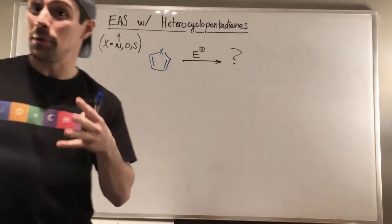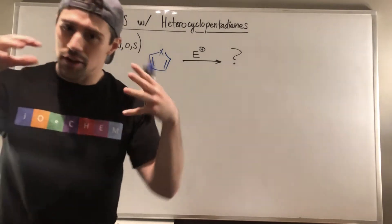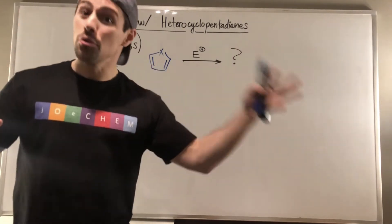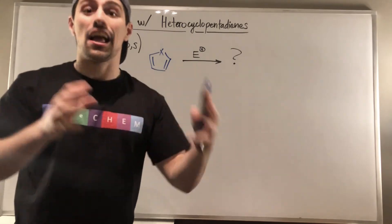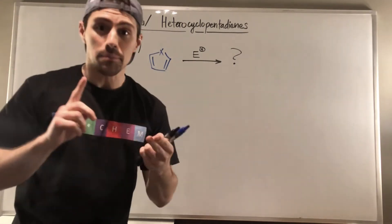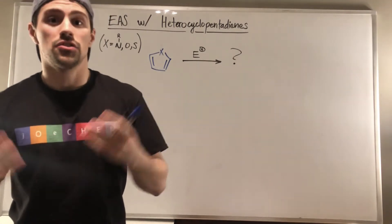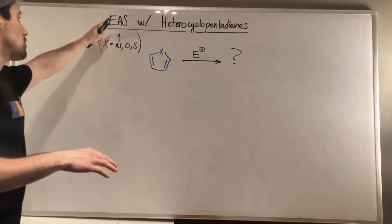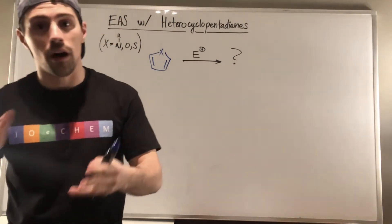Now that we got some experience with those, what I want to do is kind of take that new knowledge we have and fuse it together with some old knowledge we have. So let's do some EAS reactions. We mentioned that furan, pyrrole, and thiophene are aromatic, so there's no surprise that we can do electrophilic aromatic substitution with those molecules.